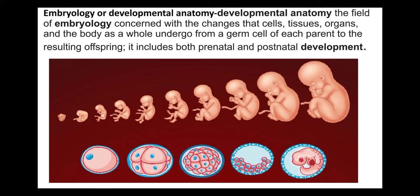In this way, the whole pregnancy is divided into three parts: first trimester, second trimester, and third trimester. Trimester refers to the changes that occur over three months. Total nine months of pregnancy divided into three parts. All changes during intra-embryonic life are called embryology, and developmental anatomy means the gradual development that takes place in prenatal and postnatal stages.